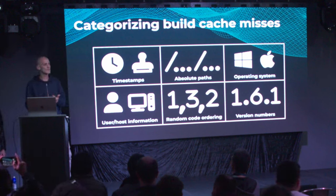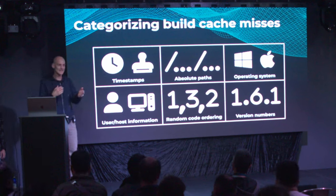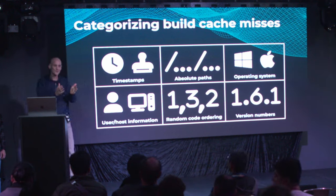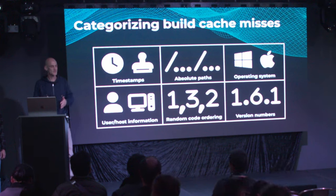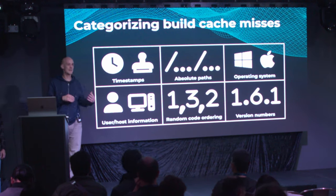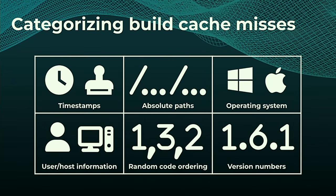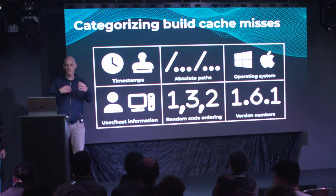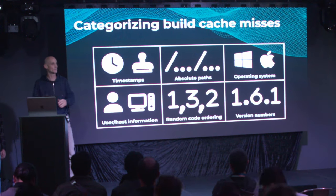The main reason is volatile inputs — inputs that change between different executions of the build, but you don't expect those changes to impact the output. For example, timestamps: every time you run the build, the timestamps are different, so you'll never get a cache hit. Or absolute paths — depending on where you run it, you'll get cache misses. Different operating systems with different line endings can also cause cache misses.